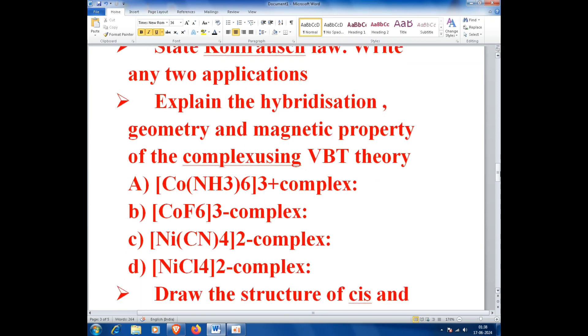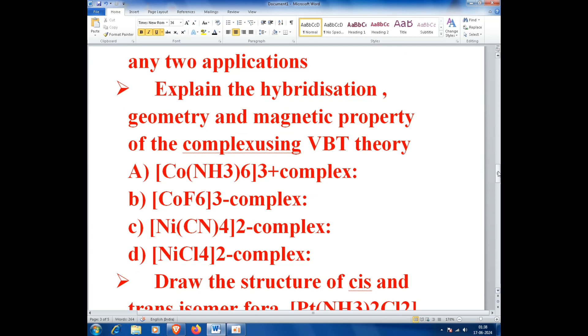Explain the hybridization, geometry and magnetic property of the complex using VBT theory: A) [Co(NH3)6]3+ complex, B) [CoF6]3- complex, C) [Ni(CN)4]2- complex, D) [NiCl4]2- complex.